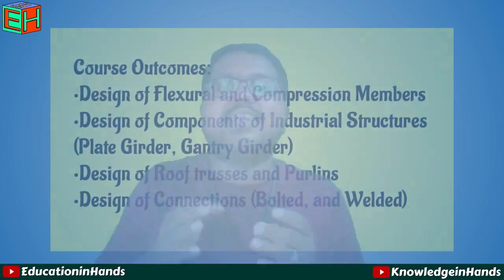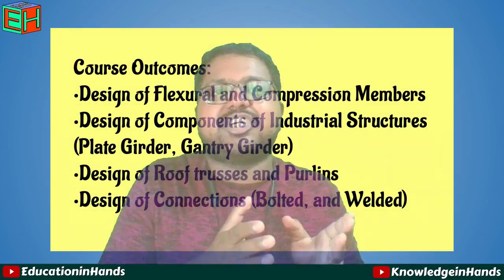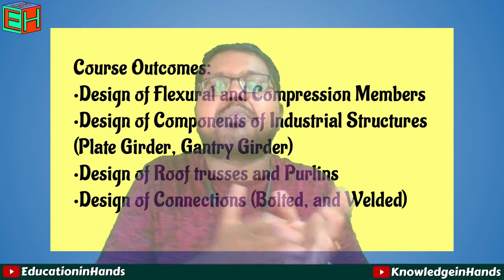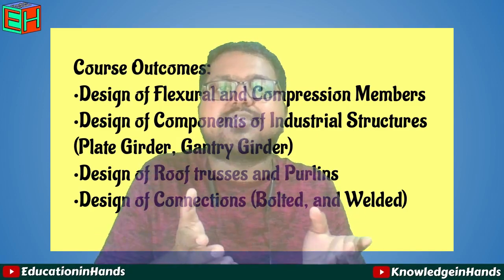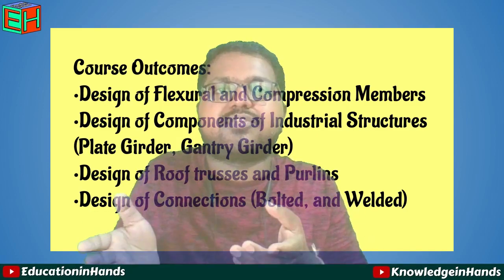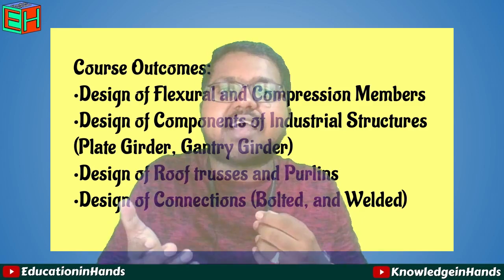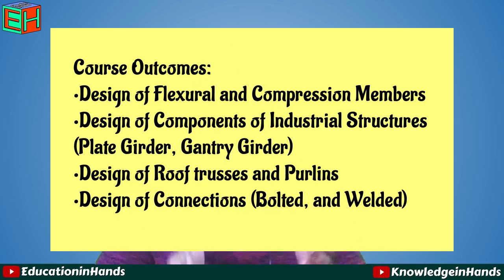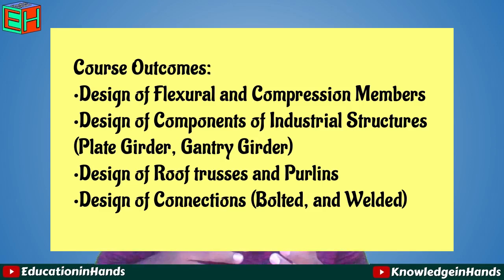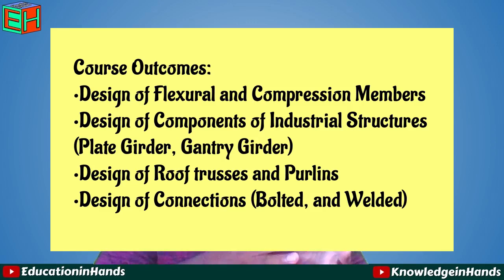At the end of this course, one will be able to design members in a structure such as flexural and compression members — which are beams and columns — as well as some components of industrial structures like plate girders and gantry girders, and also design of roof trusses and purlins, as well as their connections either by bolted or welded.